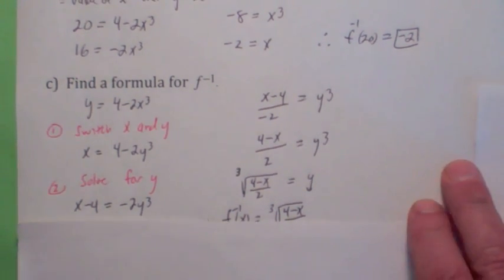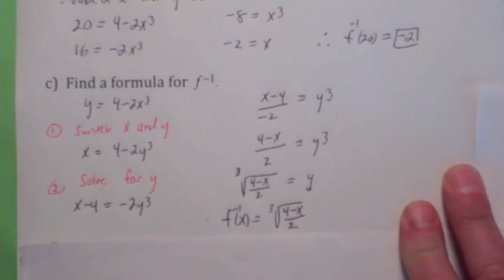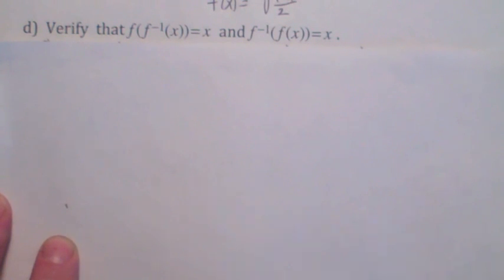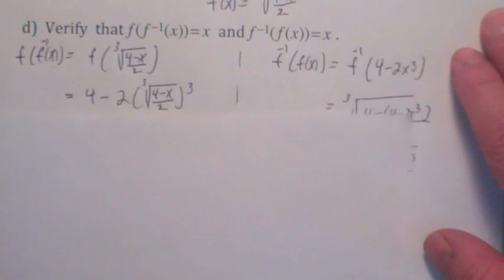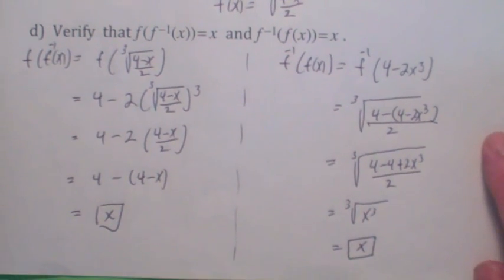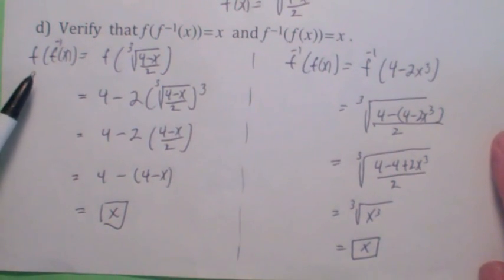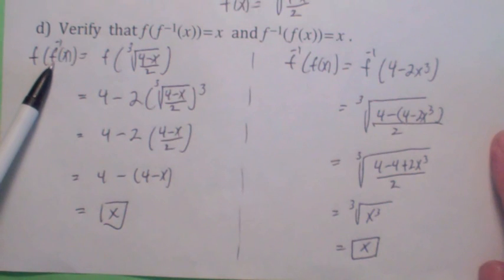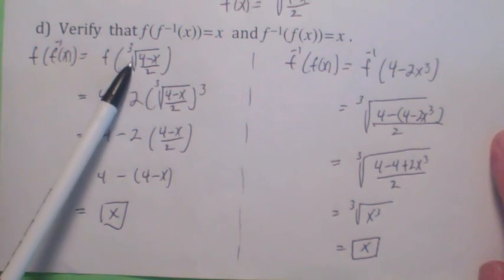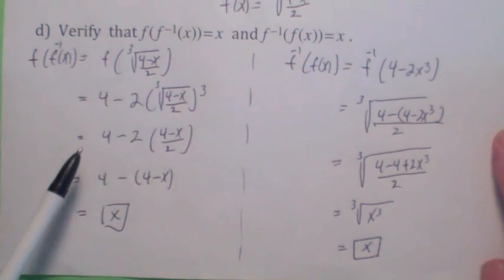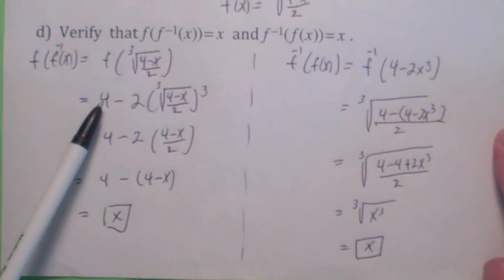So it's the cube root of 4 minus x over 2. That's what we're going to call the inverse function. See? The last thing we're going to do is verify that these two functions are inverses of each other by using the inverse function property. I only have a few seconds left. Let me just do part of it for you.